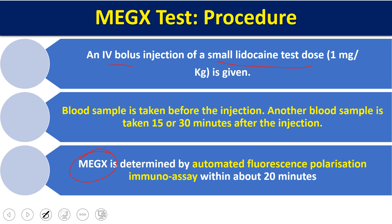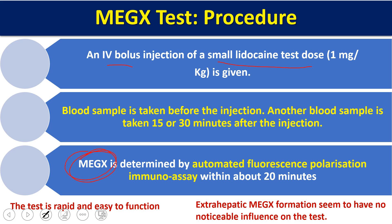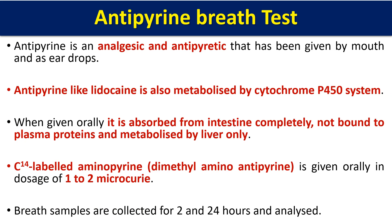If MEGX formation is detected, it means the detoxification reaction was performed — cytochrome P450 worked. If conversion is not found, cytochrome P450 is absent. This test has the advantage of being rapid and easy to perform, requiring few reagents and instruments. Any extra-hepatic MEGX formation is very minimal and does not influence the test result.